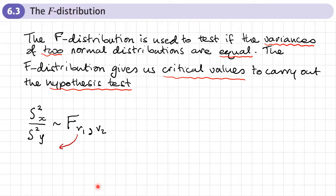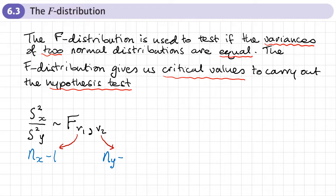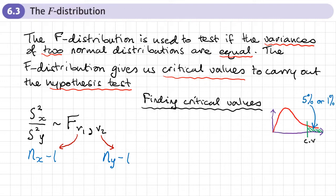The F distribution has two parameters, so we need to work out these two degrees of freedom. The first degree of freedom, ν₁, we get from the number in our sample from population X minus one — a bit like n minus one. And ν₂, the second value for the degrees of freedom, is the number in our Y population sample, again minus one.